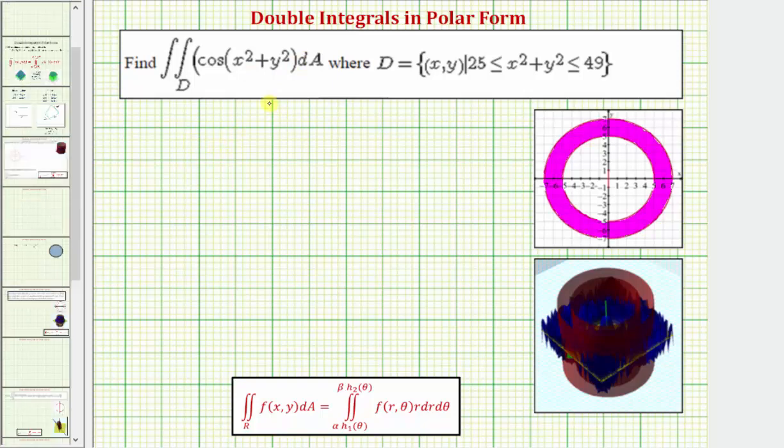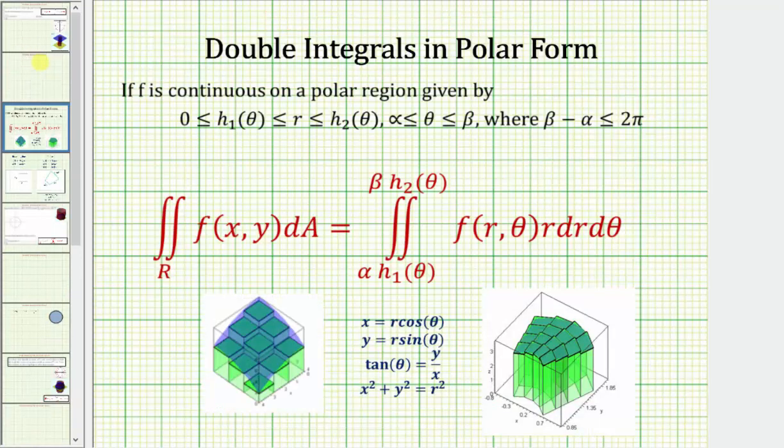When converting a double integral from rectangular form to polar form, we need to write f of x comma y as f of r comma theta, meaning we need to substitute r cosine theta for x and r sine theta for y to get a function of r and theta.